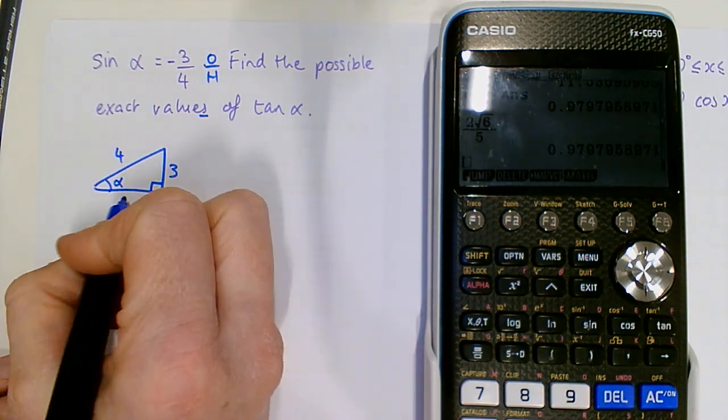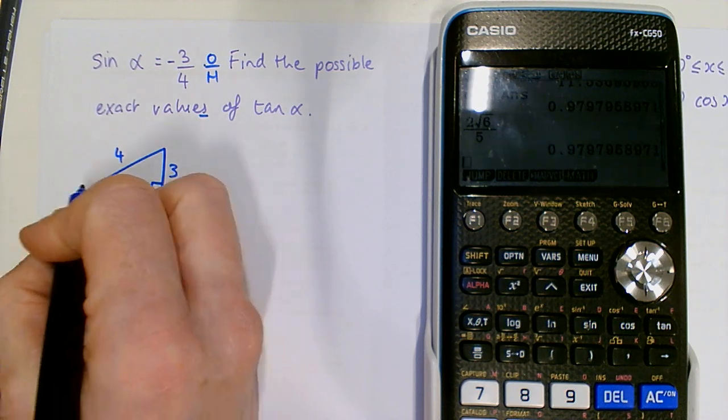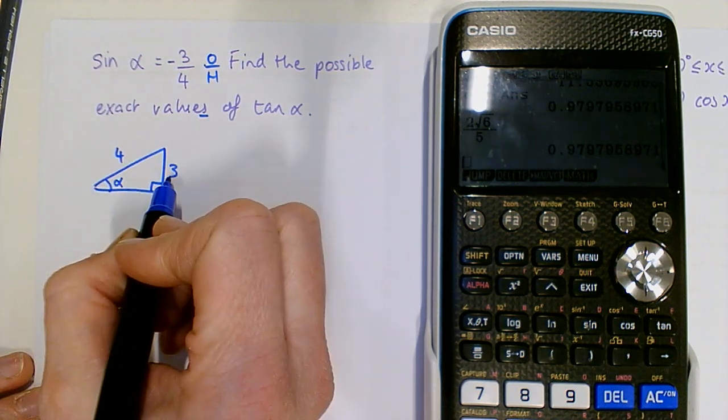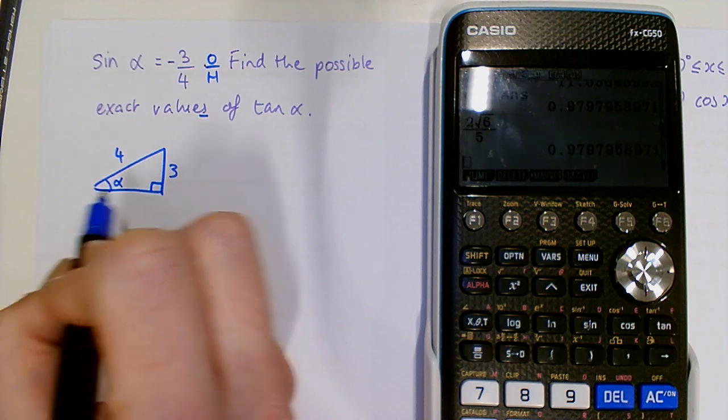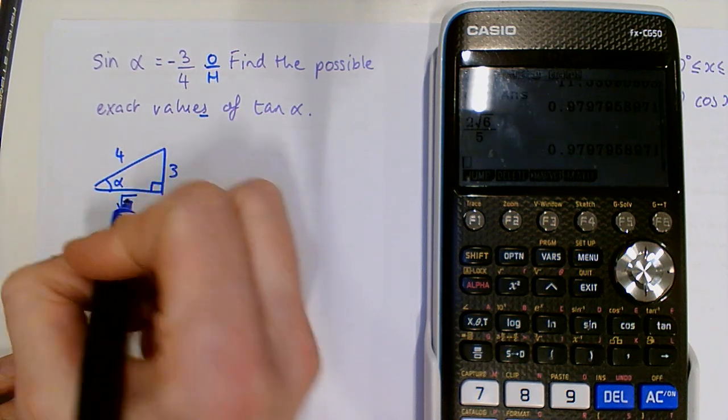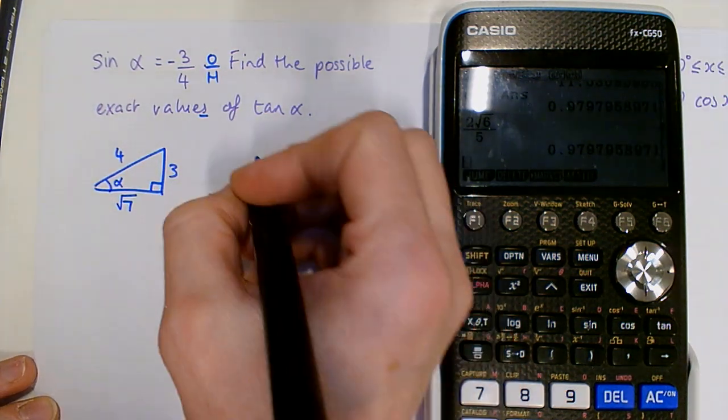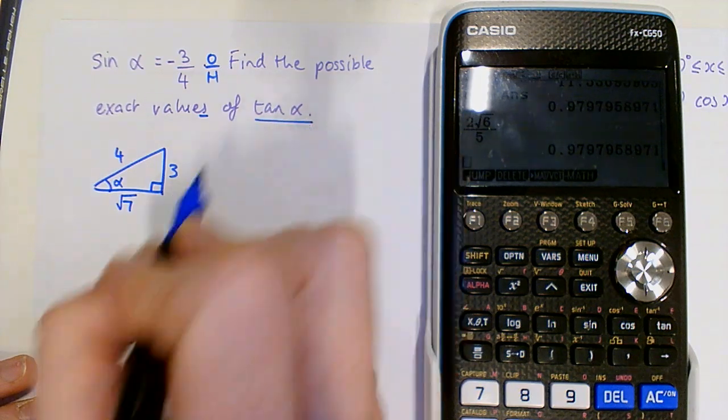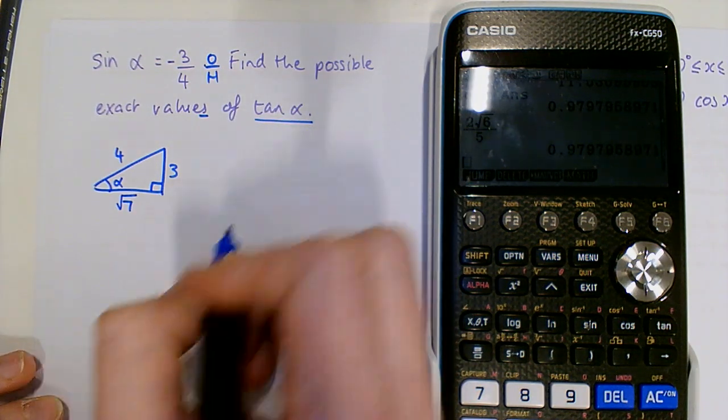So if we want to find this third side, we can use Pythagoras. So we do 4 squared minus 3 squared. So 16 take away 9, so that's going to be 7. So this is root 7. And we want the possible values, the exact values of tan.